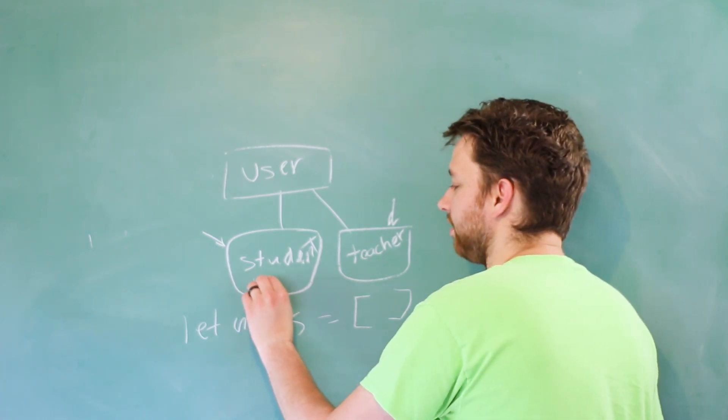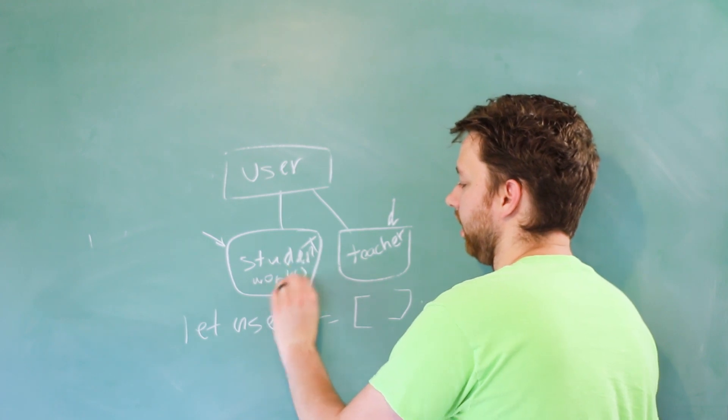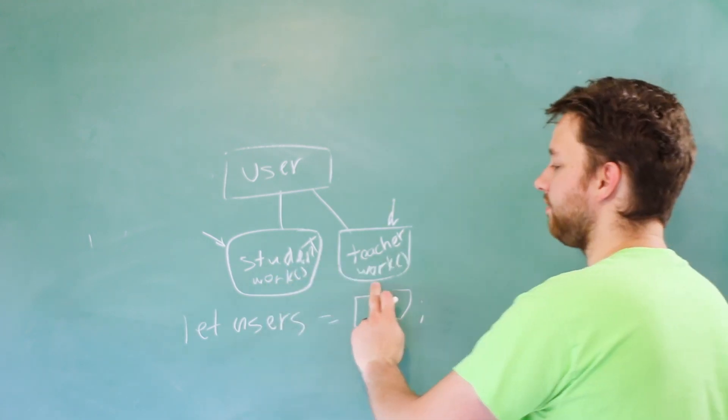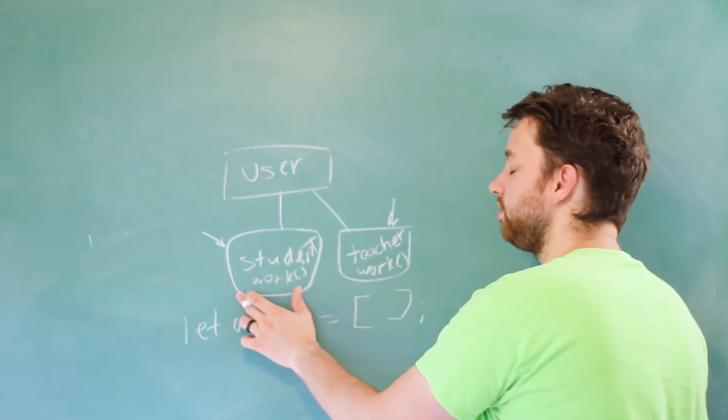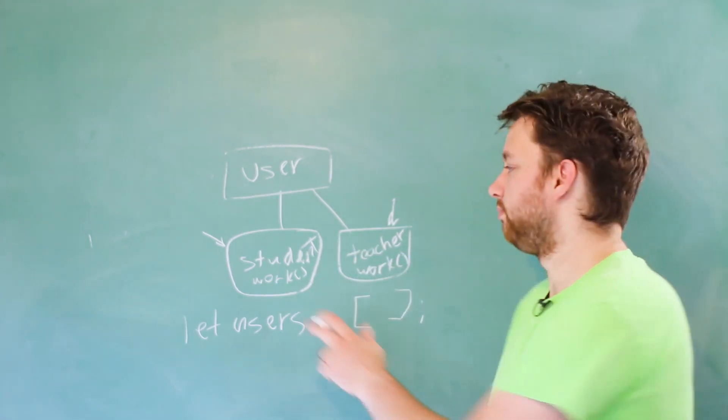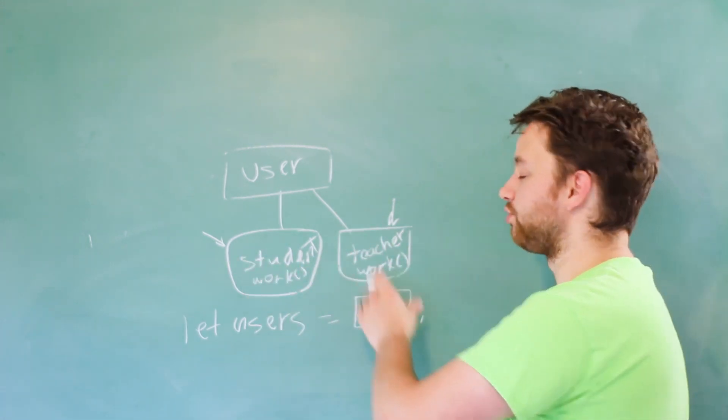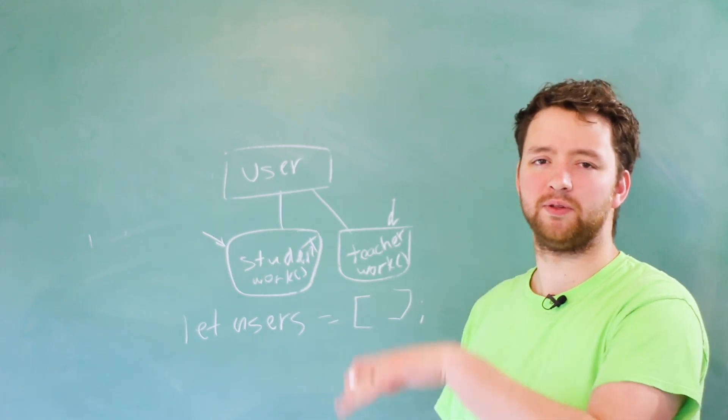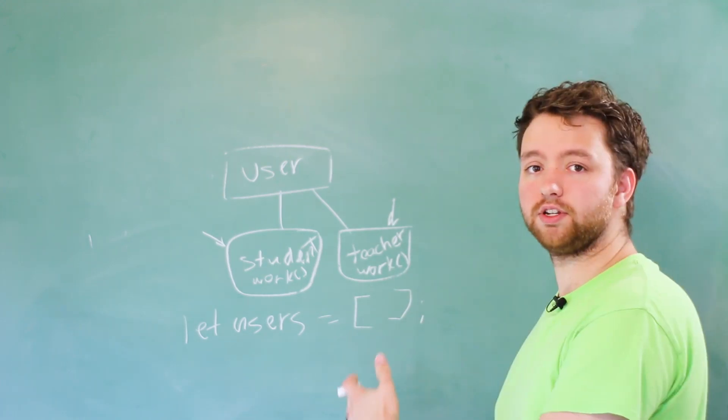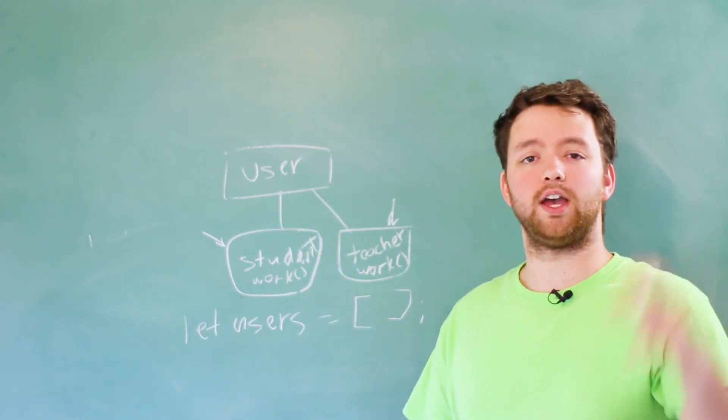And because we can override certain methods inside of the children, then we can just expect them to do the appropriate thing. So for example, let's say we have a method called work. And we have a list of users. So both the students can work and the teachers can work. Maybe the students will study. Maybe the teachers will teach or do research or whatever those professor people do.